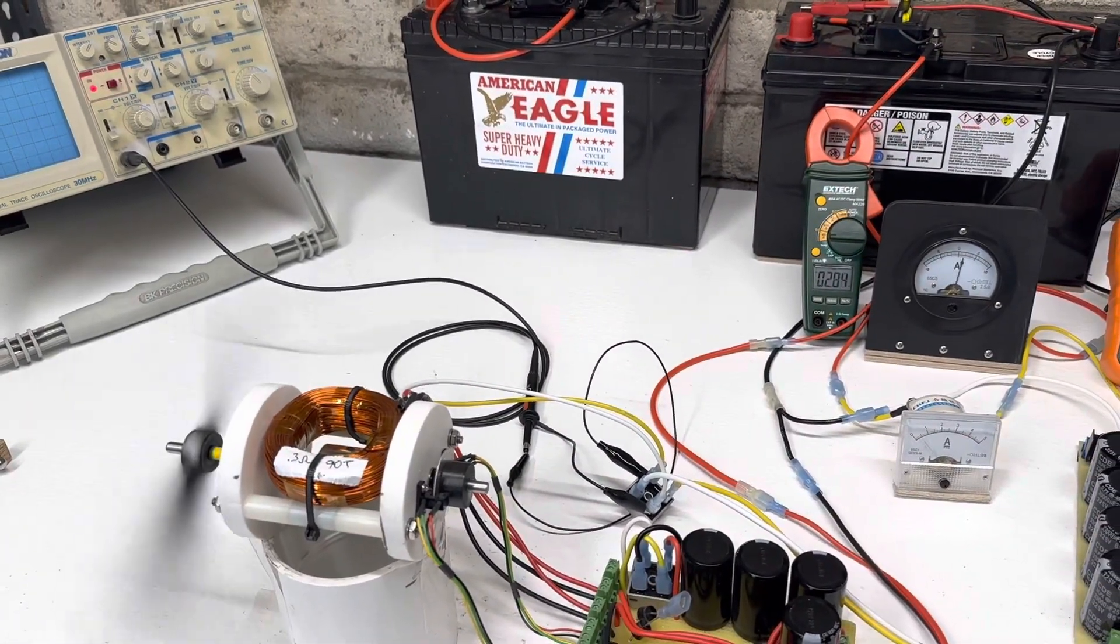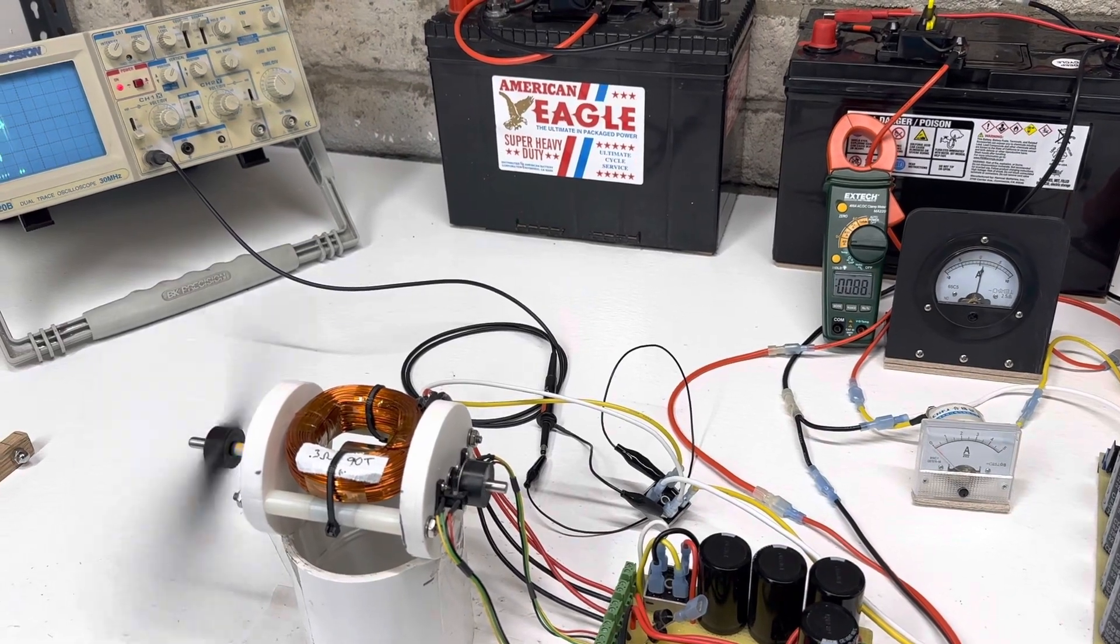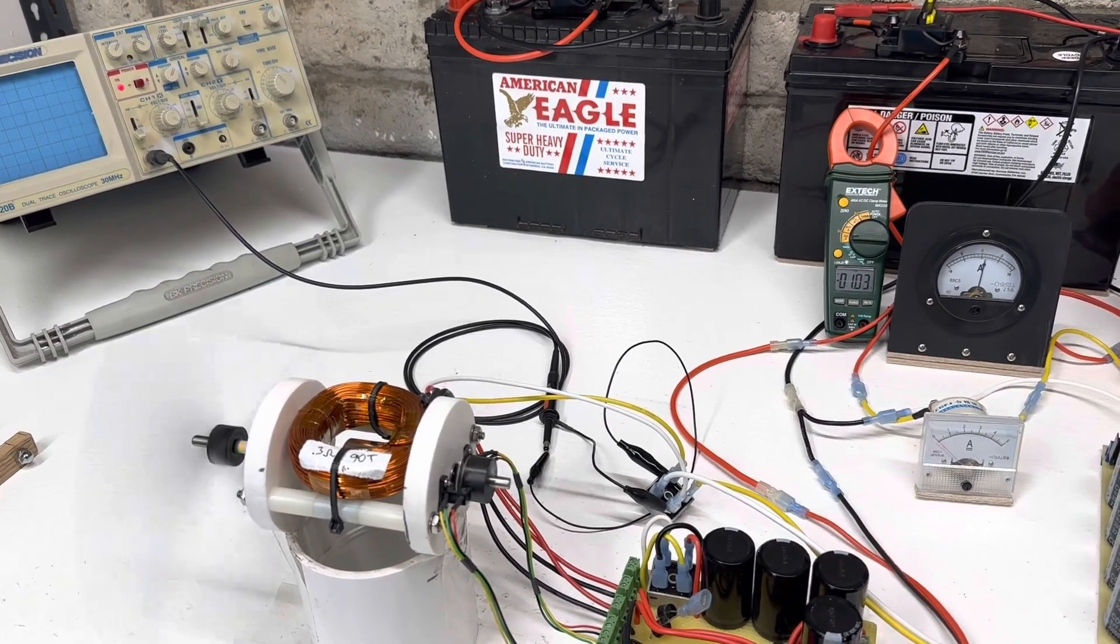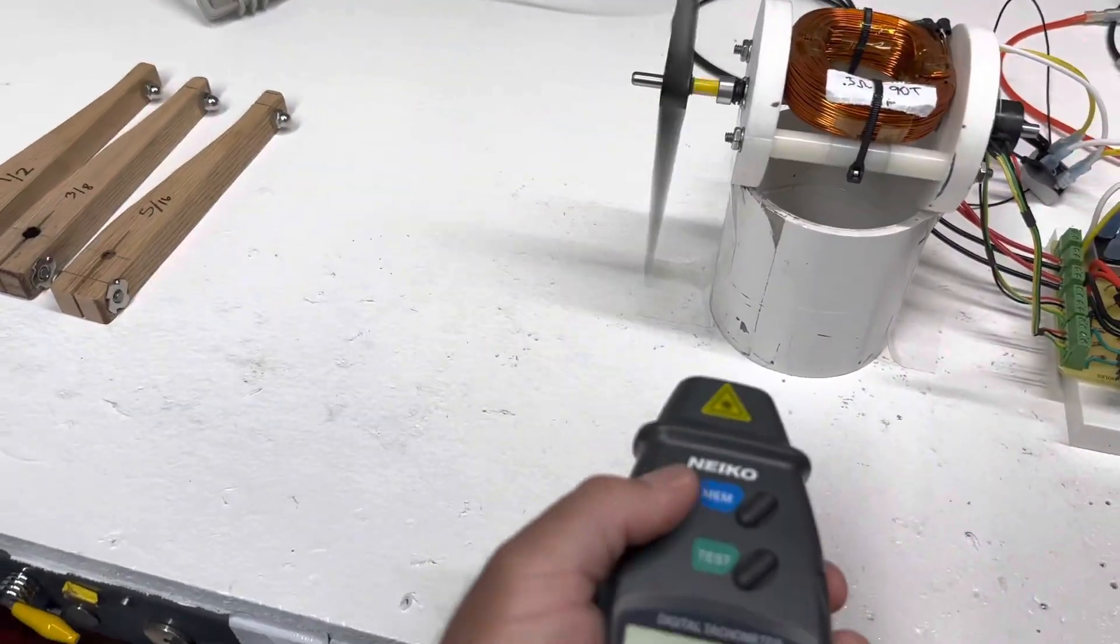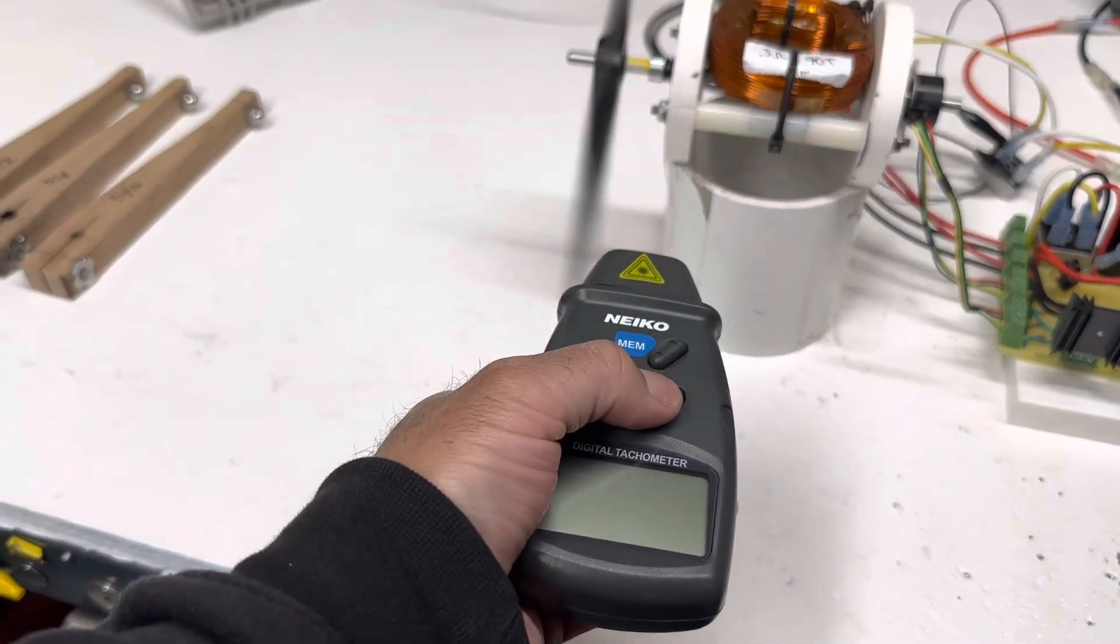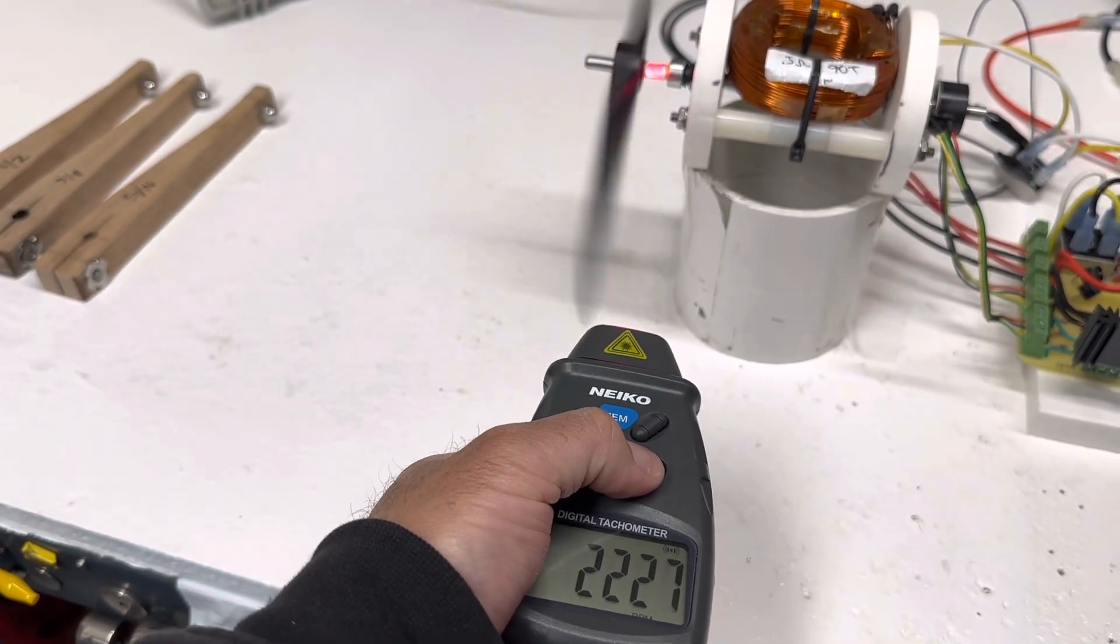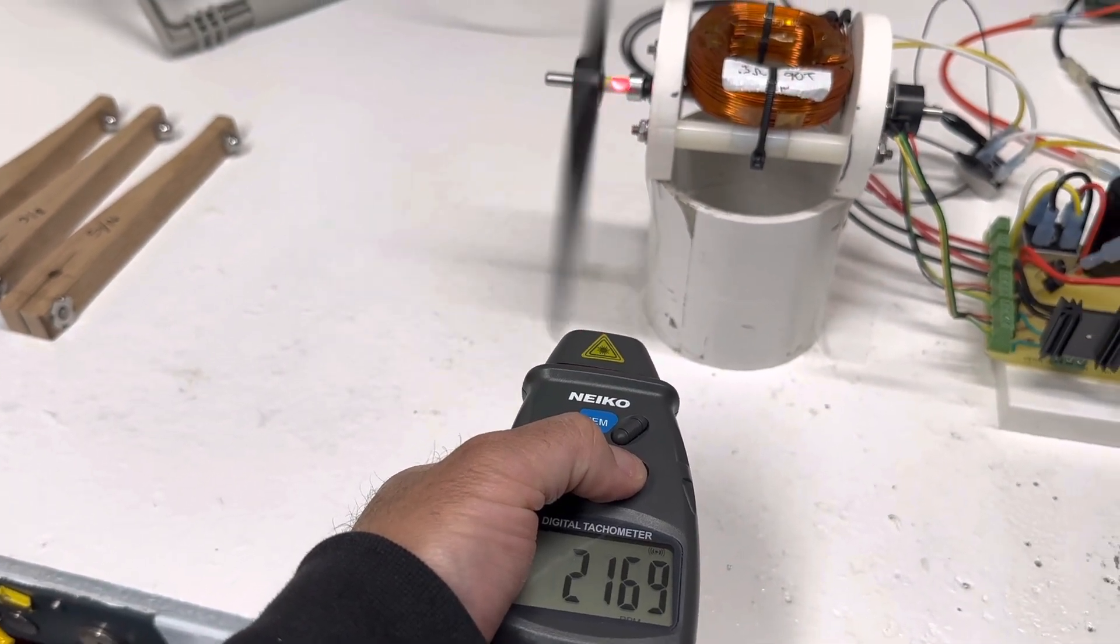So we'll bring it up to one amp. See what kind of RPM we get at one amp. So this is a seven-inch prop as the load. 2200 RPMs.